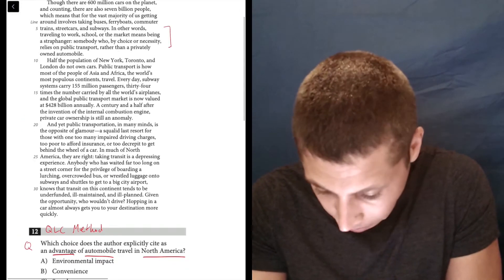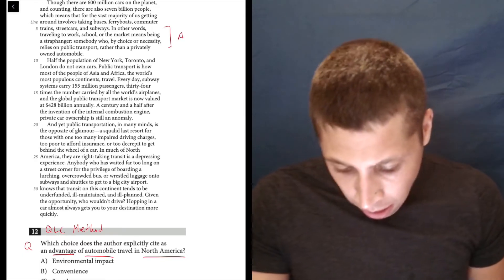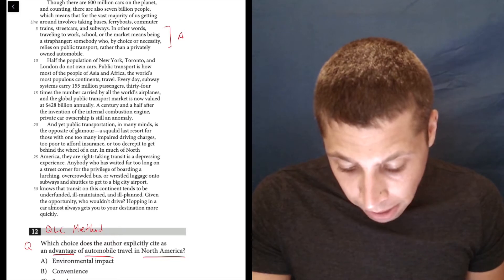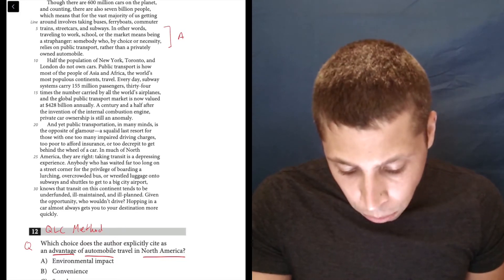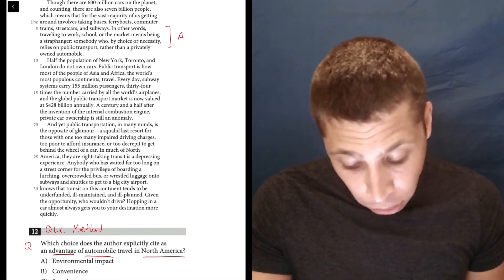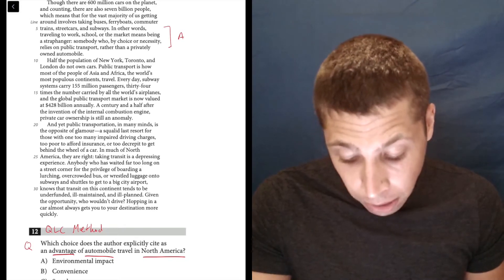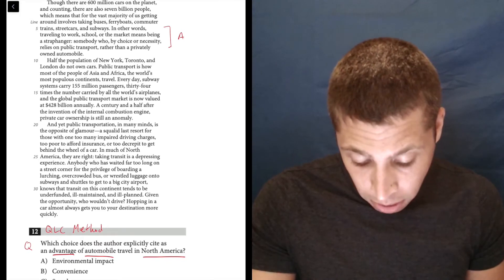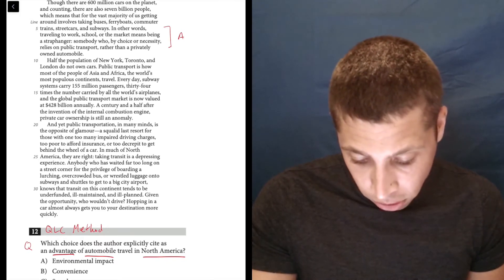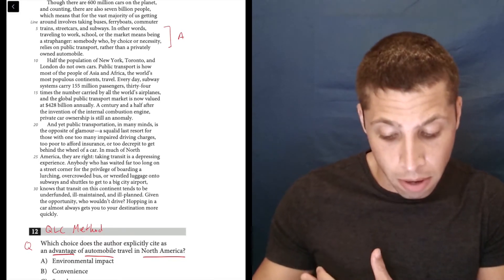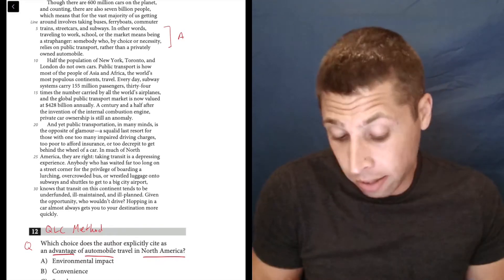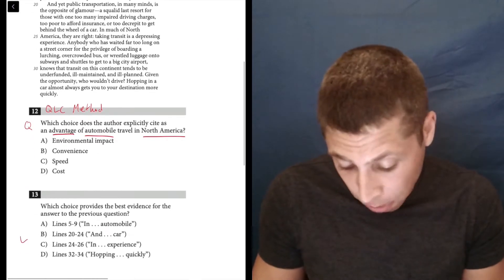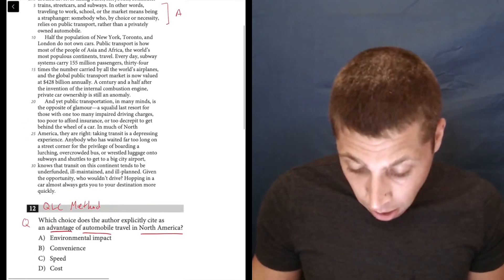So that is here. Choice A. In other words, traveling to work, school, or the market means being a strap hanger, somebody who by choice or necessity relies on public transport rather than a privately owned automobile. Well, it talks about cars, but it doesn't say any advantage of automobile travel, right? It just describes someone who would be on public transit instead of having a car. It doesn't say why that's good or bad. So this just seems random to me, doesn't help.